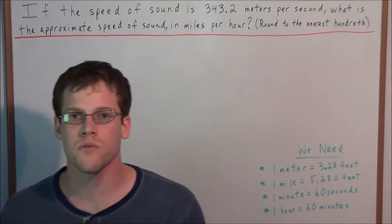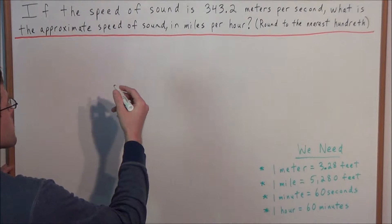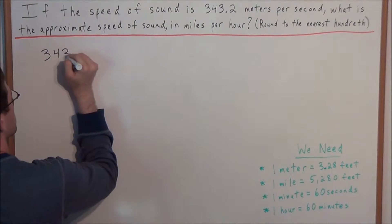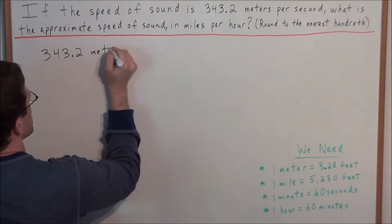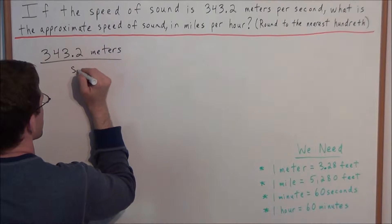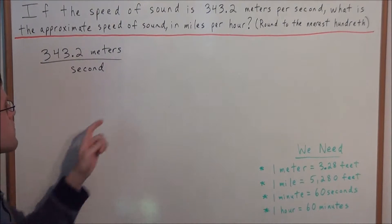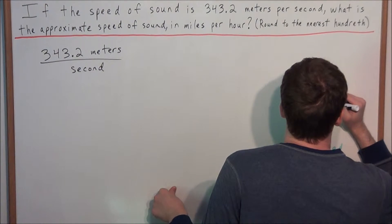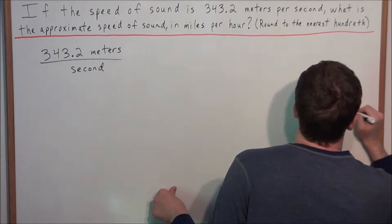To do a problem like this we're going to use conversion analysis. Let's start off with the information that was given to us — the speed of sound is 343.2 meters per second. We're going to set this up as a fraction: meters over second. Our goal is to convert this to miles per hour, so our end result should be in the form of miles per hour.